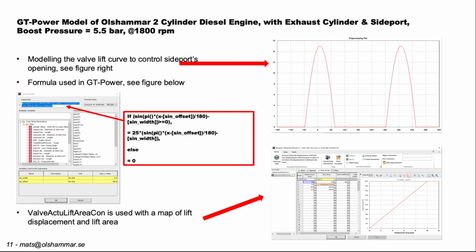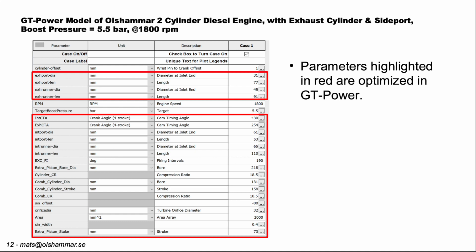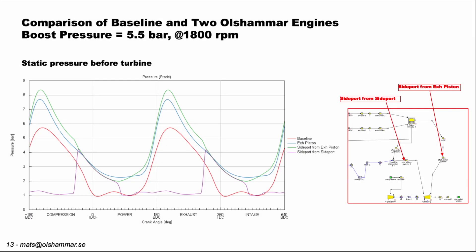These functions are showing the setup of the simulation of the side port — specifically the side port area setup. Here are the parameters that we are optimizing. So here we have a rather complicated graph showing a comparison between the baseline and the two different Olsammar engines.